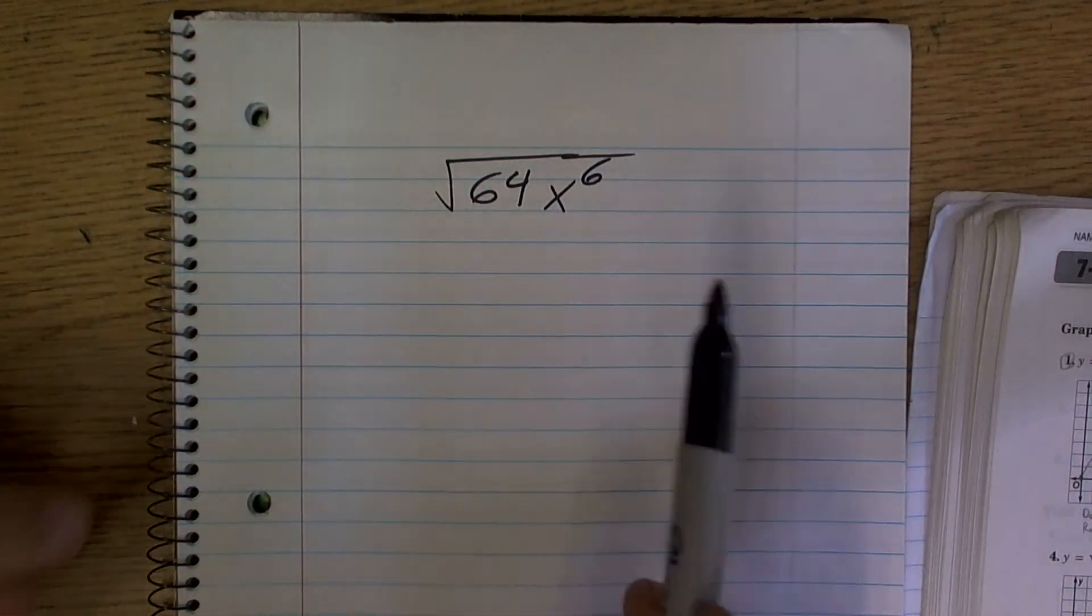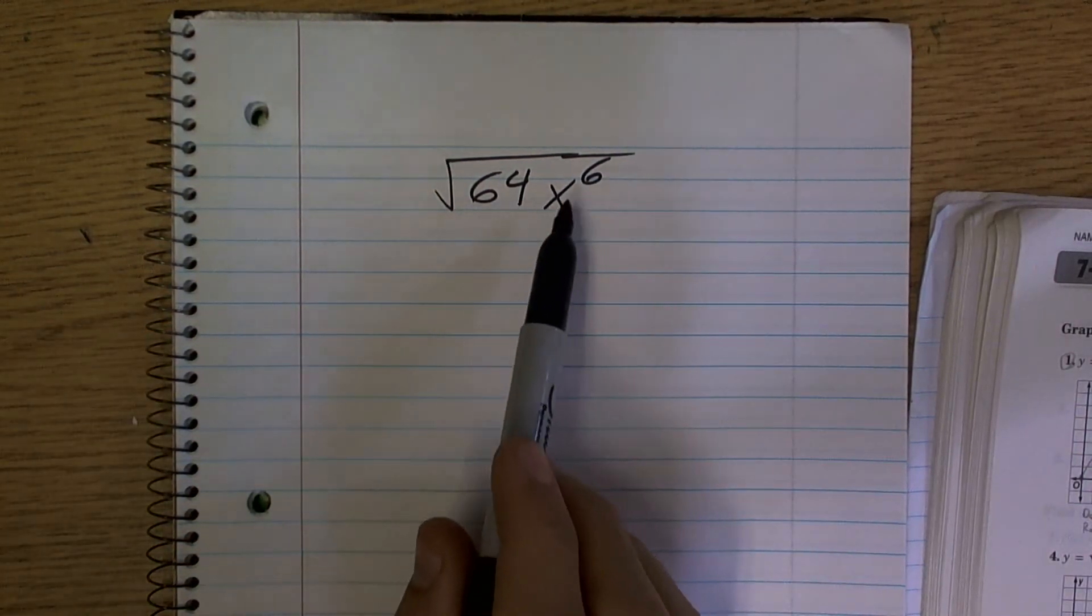Okay, so we want to, you see it? We want to be able to take the square root of 64 and x to the 6.